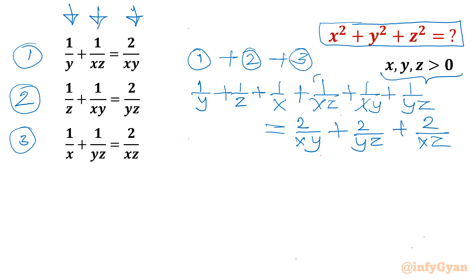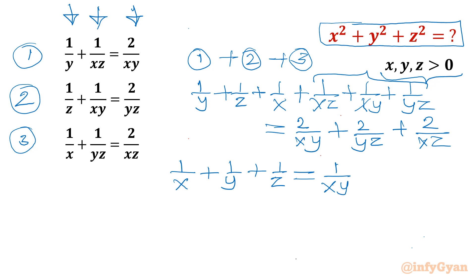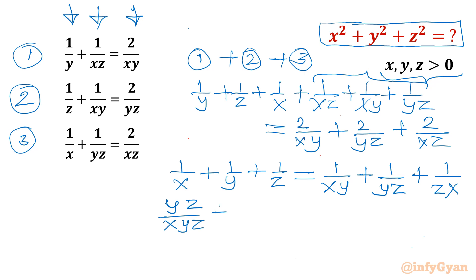Now I will take the three terms from the second column to the RHS. The LHS becomes 1/x + 1/y + 1/z. The RHS becomes: 2/xy − 1/xy = 1/xy; 2/yz − 1/yz = 1/yz; 2/zx − 1/zx = 1/zx. Now, 1/xz can be written as yz/xyz; 1/y can be written as xz/xyz; 1/z can be written as xy/xyz. On the RHS, 1/xy = z/xyz; 1/yz = x/xyz; 1/zx = y/xyz.